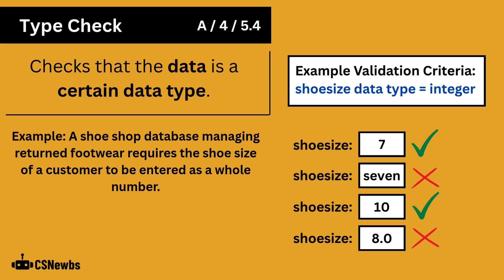A type check checks that the data is a certain data type. In this example, the shoe size has to be an integer. So 7 is accepted because it's a whole number, but S-E-V-E-N is a string, so it's not accepted. 10 is accepted, but 8.0 is a real or float value, so it is not accepted.